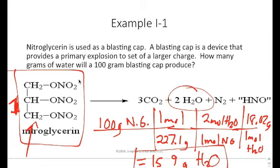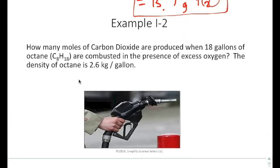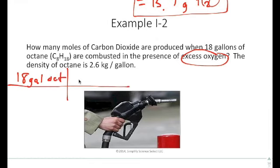The next example that we have says how many moles of carbon dioxide are produced when 18 gallons of octane are combusted in the presence of excess oxygen. So that's a key right here. And what that lets me know is that I have enough oxygen to make this reaction occur because we will talk about limiting reagent after this. So we start off with a little dimensional analysis where we say we have 18 gallons of octane.